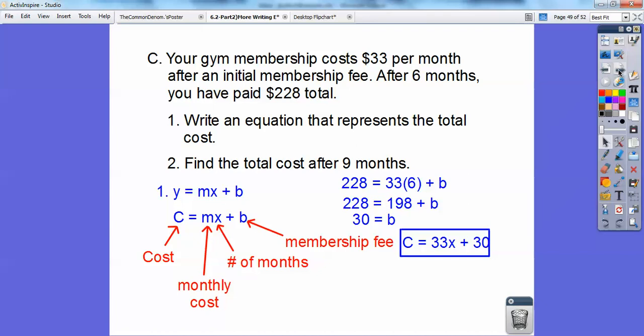The next part is easy. You're just going to plug in 9 for your number of months for x, and so when you plug that in, you get $327.